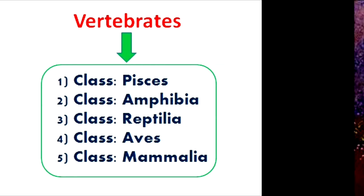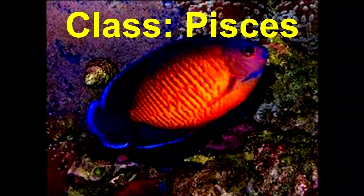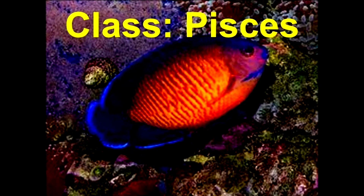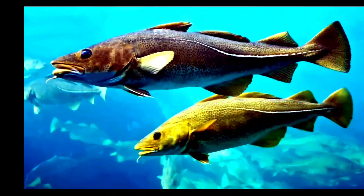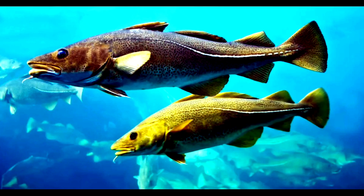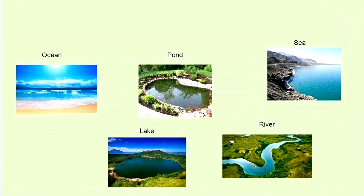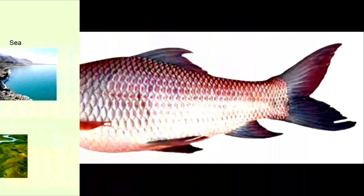First of all let's discuss about Class Pisces. Animals of Class Pisces are aquatic in nature. They are found in rivers, lakes, ponds, seas and oceans.